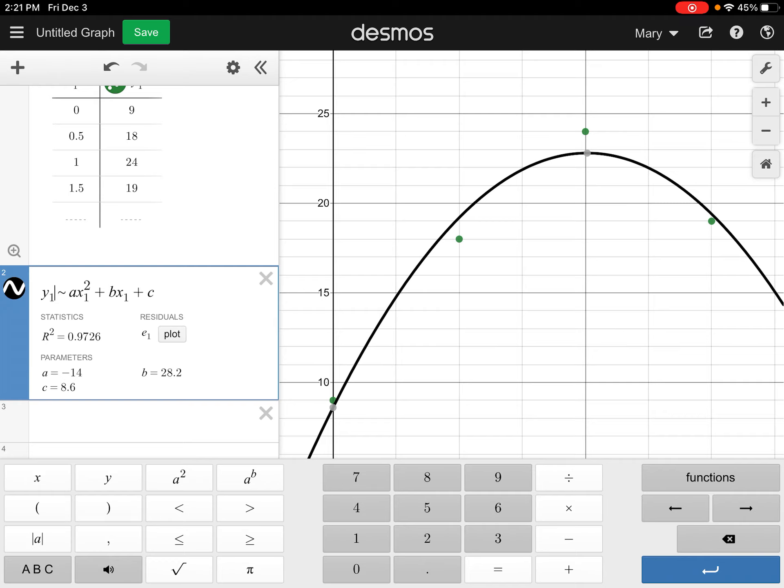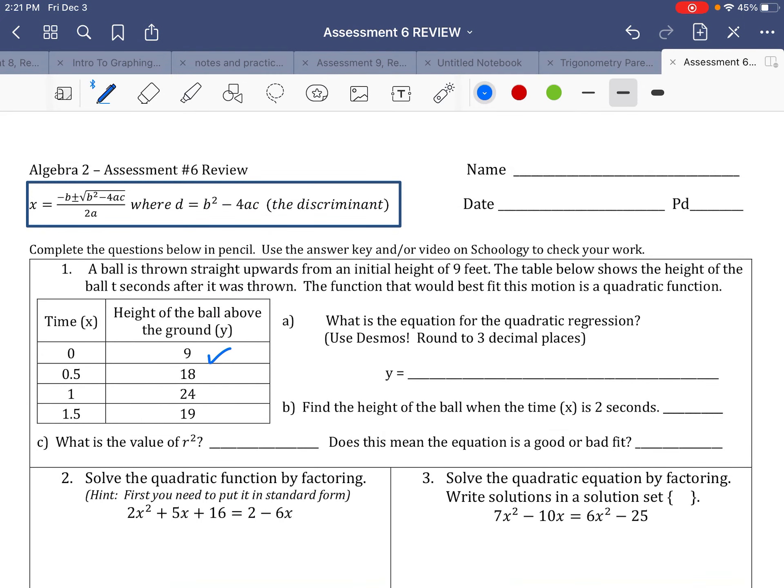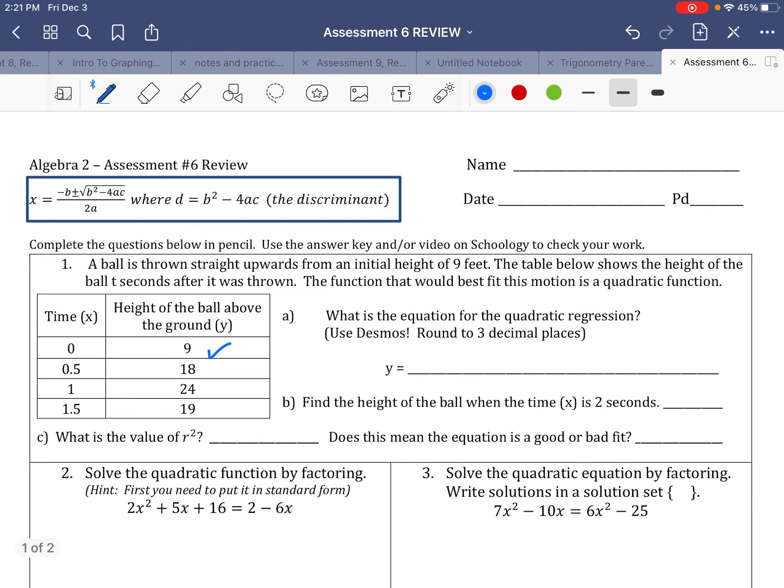I have to have this X1 and Y1 in there so that it knows to use the numbers in the table. There's my numbers. I have A is negative 14, B is 28.2, and C is 8.6. My equation is AX squared plus BX plus C. So let's go back and fill that in. My A value is negative 14, so Y equals negative 14X squared plus 28.2X plus 8.6.